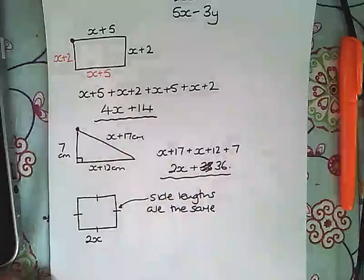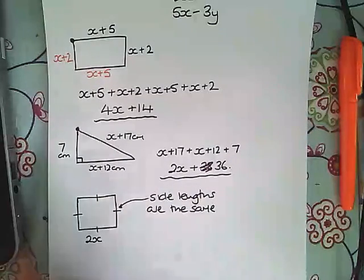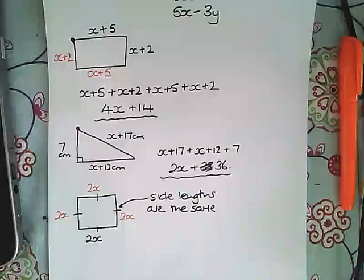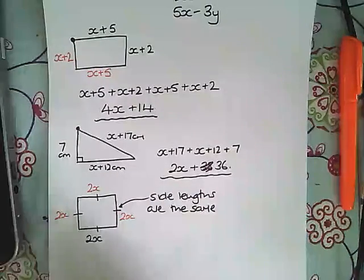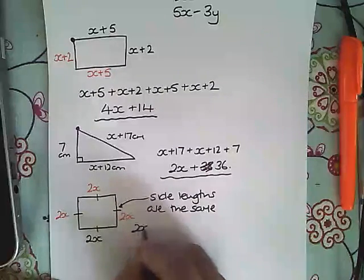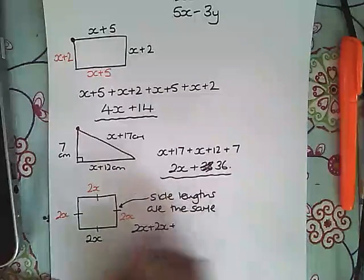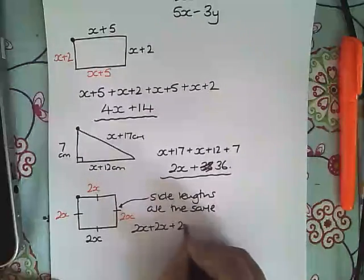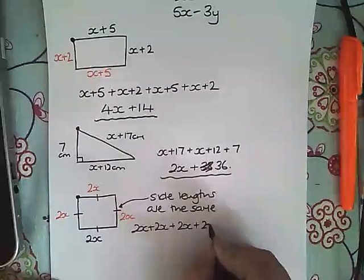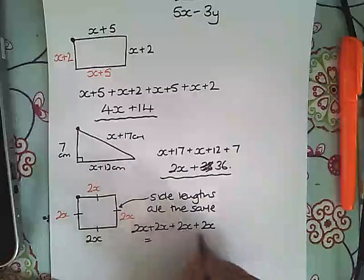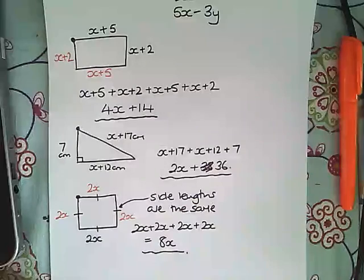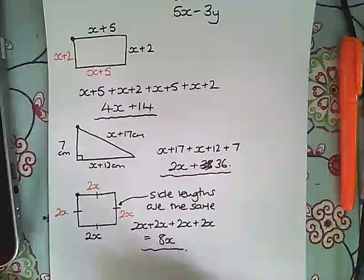So you could write in your extra side lengths 2x, 2x, and 2x, and then add them all together: 2x plus 2x plus 2x plus 2x. And all together, 2, 4, 6, 8, that's 8 lots of x, so 8x for that one.